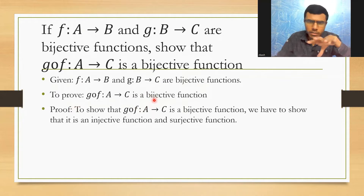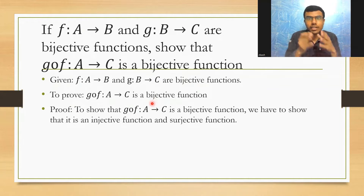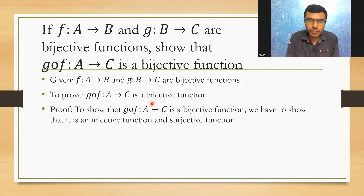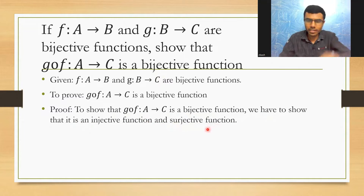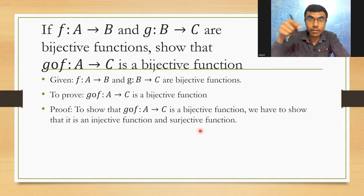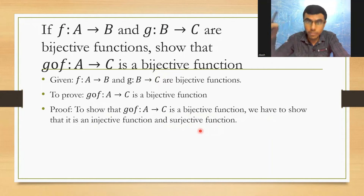A bijective function means that if a function is both an injective function and a surjective function, then we say that it is a bijective function. So to show that g∘f:A→C is bijective, I need to show it is injective as well as surjective. The vice versa is also true: if a function is bijective, then it is naturally both injective and surjective — that's what I am going to use.